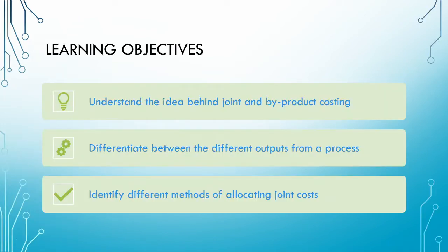Let us consider our learning objectives for this overview video. First, we want to understand the idea behind joint and byproducts and what makes them different to the manufacturing of other products. Then we need to be able to differentiate between the different outputs from a joint process. Finally, we need to identify the different methods of allocating our joint costs. We will unpack each of these different methods in our subsequent videos.